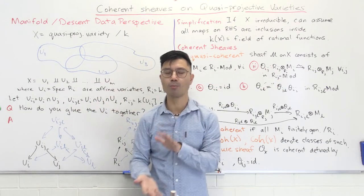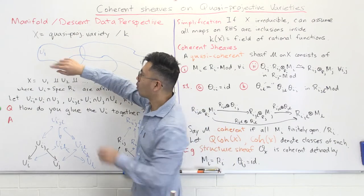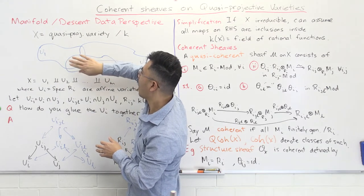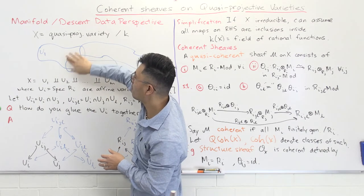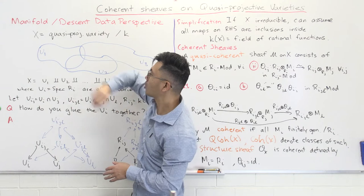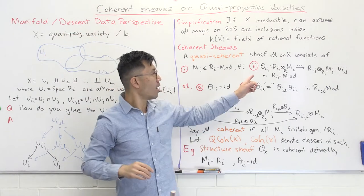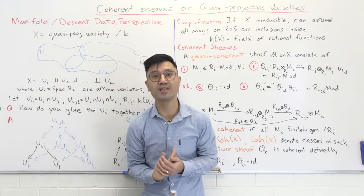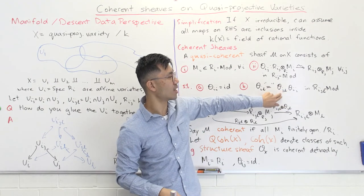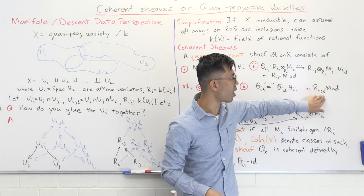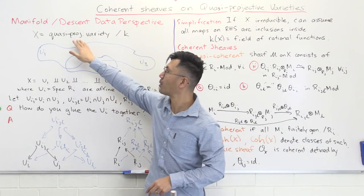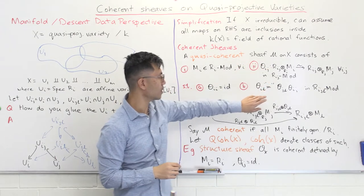Because there are more than two patches, you have to be careful. Suppose you glue the patch over Uᵢ to the patch over Uⱼ, and then on the triple intersection you identify that to the one on Uₗ. That allows you to identify the part on Uᵢ with Uₗ, but you can also go directly using θᵢₗ. You want to make sure those are the same, so the condition is that θᵢₗ = θᵢⱼ ∘ θⱼₗ, as Rᵢⱼₗ-modules on the triple intersection. This is set up to work properly for projective varieties.